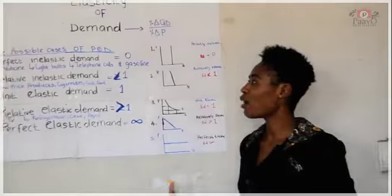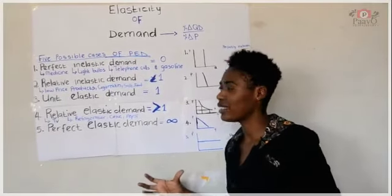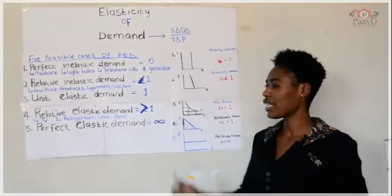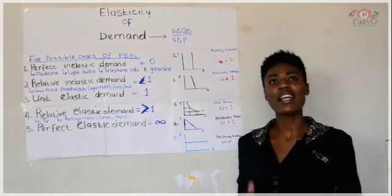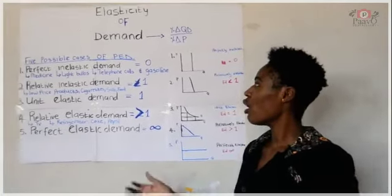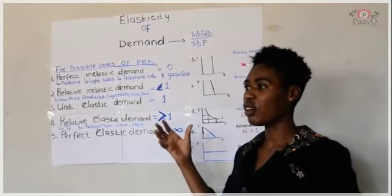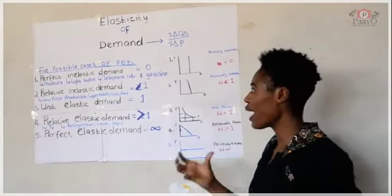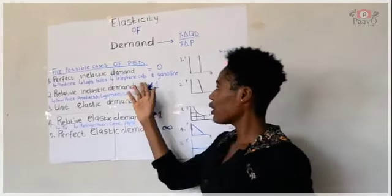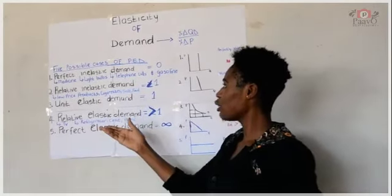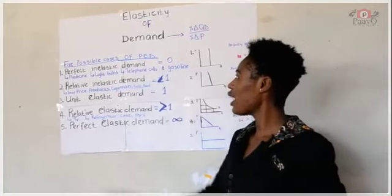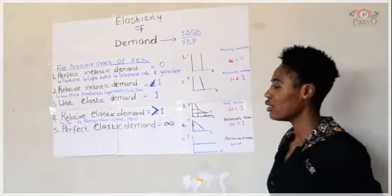Let's talk about inelastic demand. When something is inelastic, it is something that does not stretch. Here we are saying that the percentage change in price does not affect the percentage change in demand. Products such as necessities, light bulbs, telephone calls for businesses, and gasoline fall under inelastic demand.